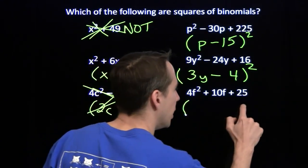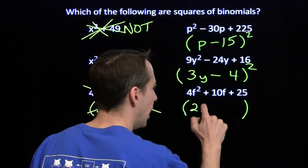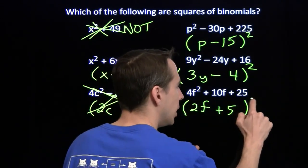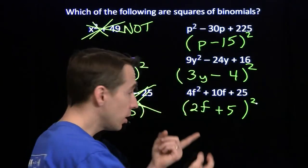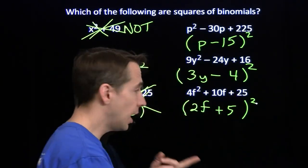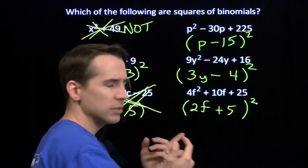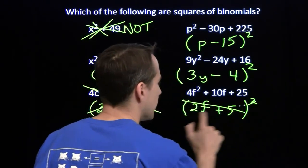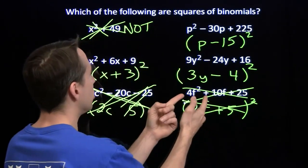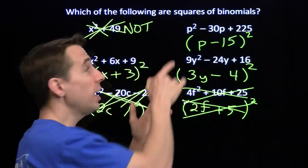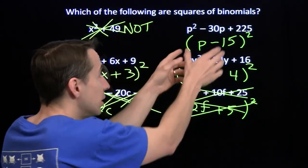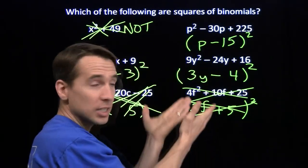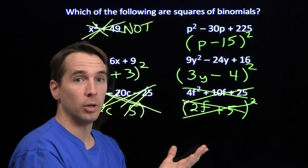How about 4f squared plus 10f plus 25? If this is the square of a binomial, we have 2f and plus 5. Squaring 2f gives 4f squared and squaring 5 gives 25. But 2 times 2f times 5 gives 20f, not 10f. That doesn't work — this is NOT the square of a binomial. It's very important to be able to go both ways: expand squares of binomials, and also recognize them to factor expressions.